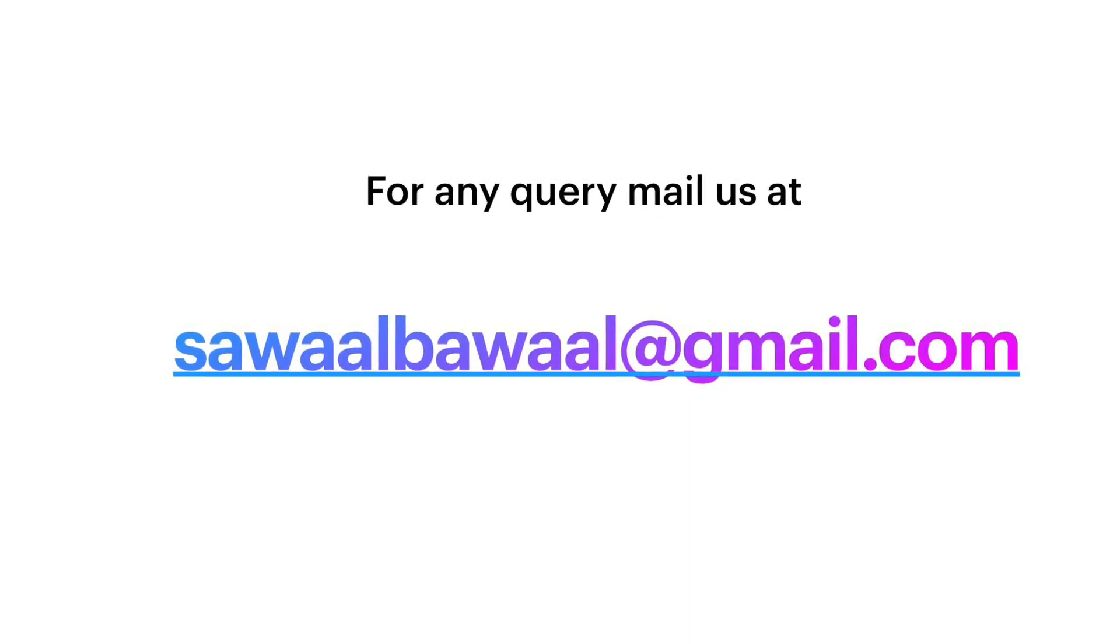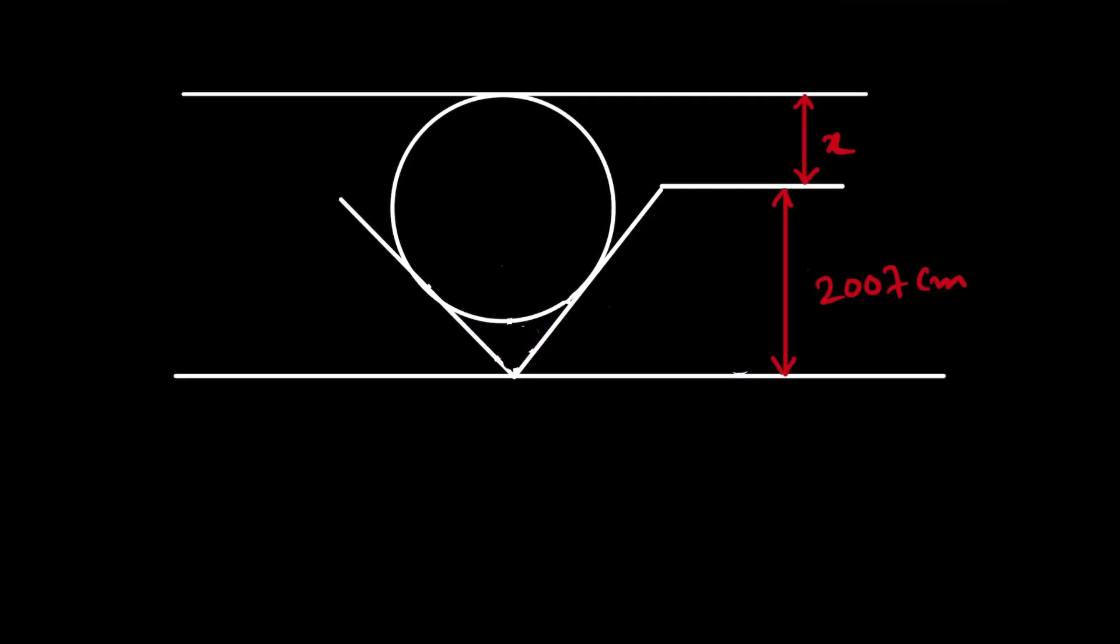Now, let us start to solve this question. To solve this question, let us mark the joining points. Let it be A, this is B, C, D, this point as E and this as F.